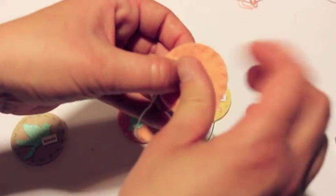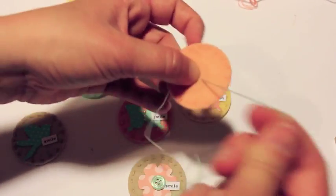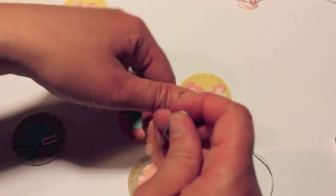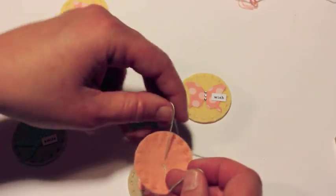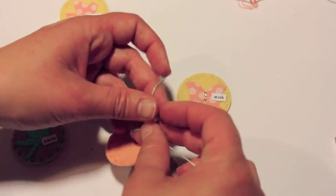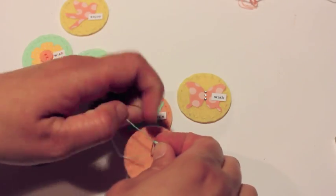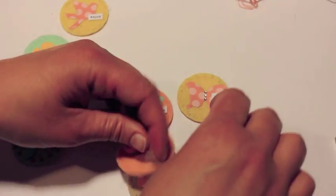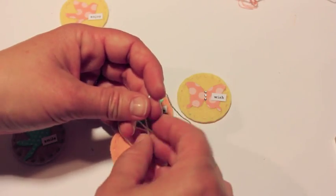And then after I get my thread sewn through twice I'm just going to take the two ends here and just tie them in a double knot. This is on the back no one's going to see it so that'll be nice and secure and I know my button is not going to fall off.